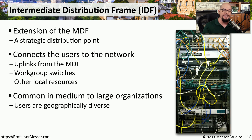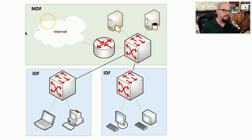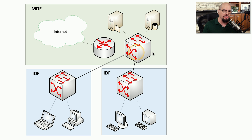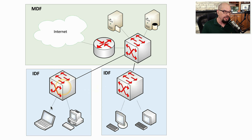This makes it easy to manage connections, because all of your user links can be modified in the IDF, and all of your server connections are usually associated with the MDF. Here's a layout that shows a centralized MDF that includes an internet connection with an internet router. There may be database and file servers and a main central switch in the MDF. In other parts of the building, you might have individual IDFs with a local workgroup switch connecting to the users on that particular floor.